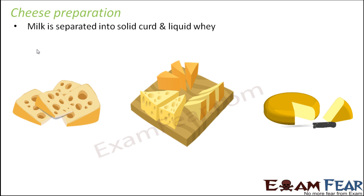Milk is separated into solid curd and liquid whey. The same process of curdling is initiated: you take milk in a bowl and add a little bit of starter. Here the starter is not curd — it is mostly a little bit of lemon juice or vinegar. After a couple of minutes, the milk gets separated into a solid curd-like thing and a remaining watery liquid called whey.